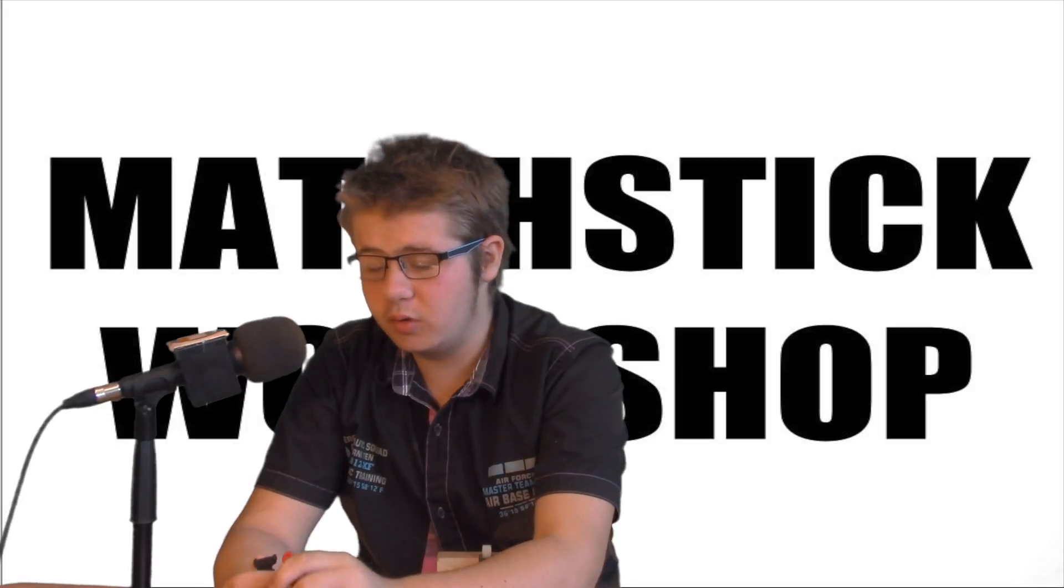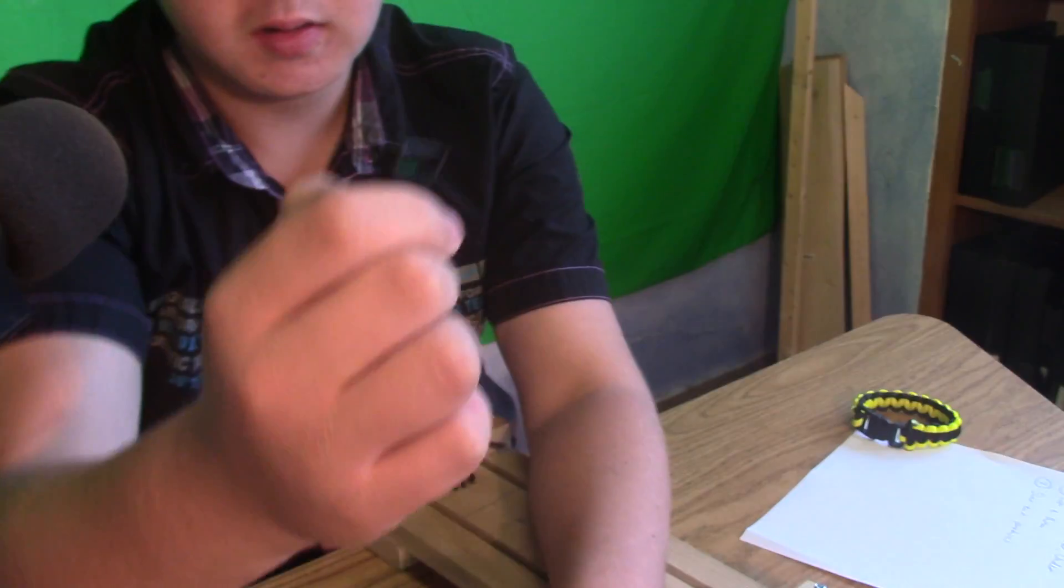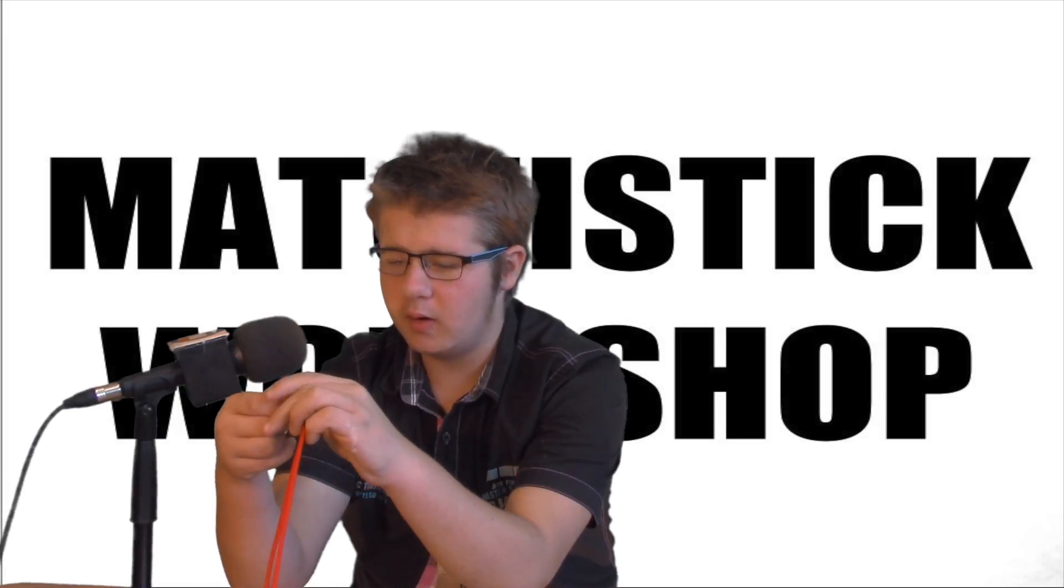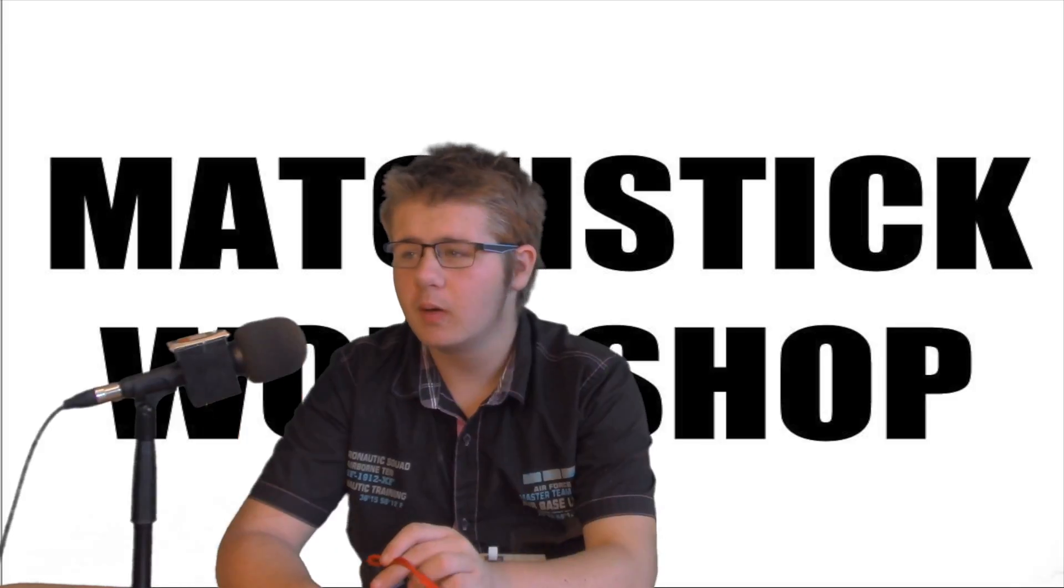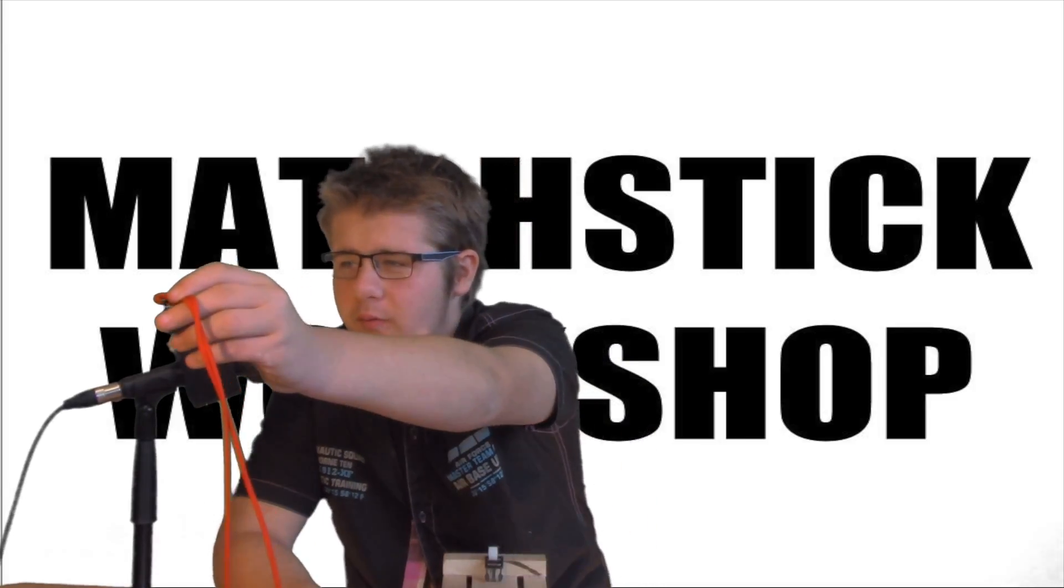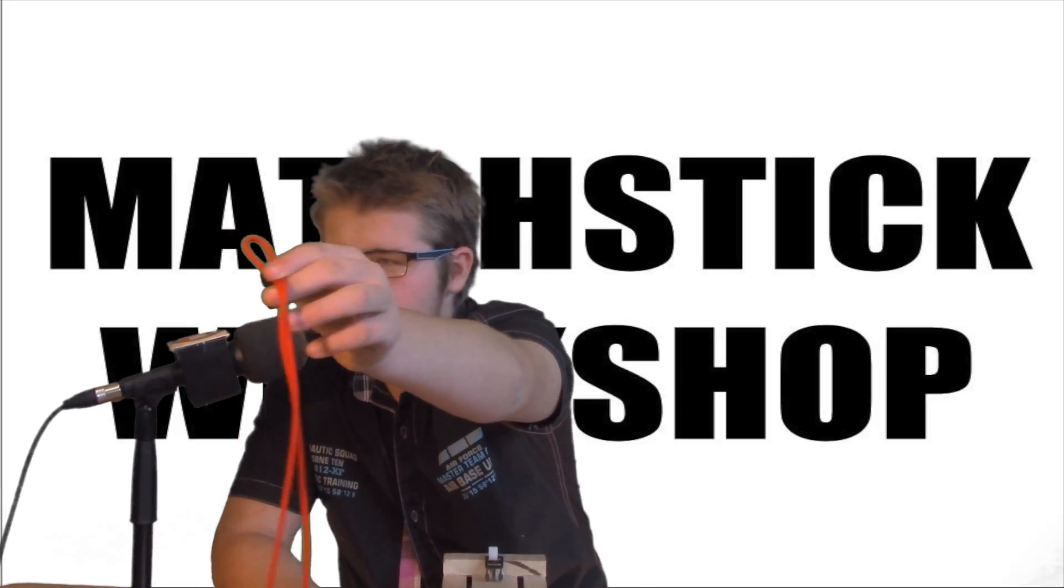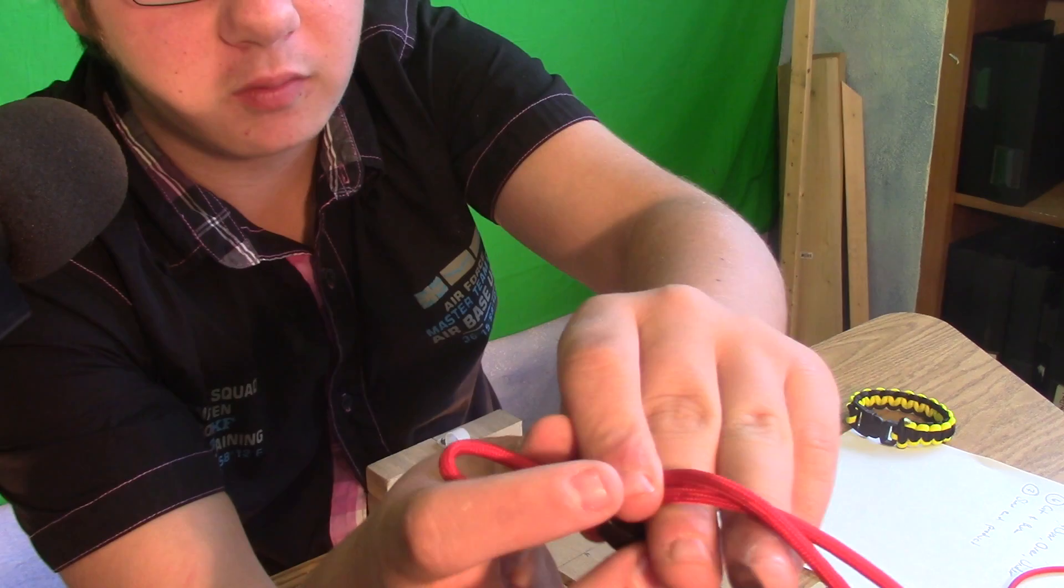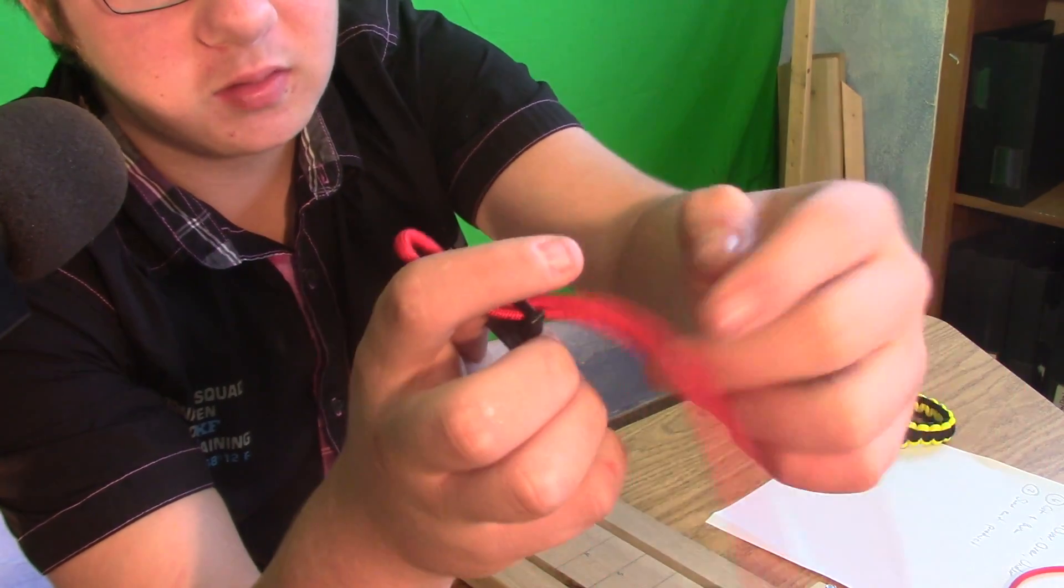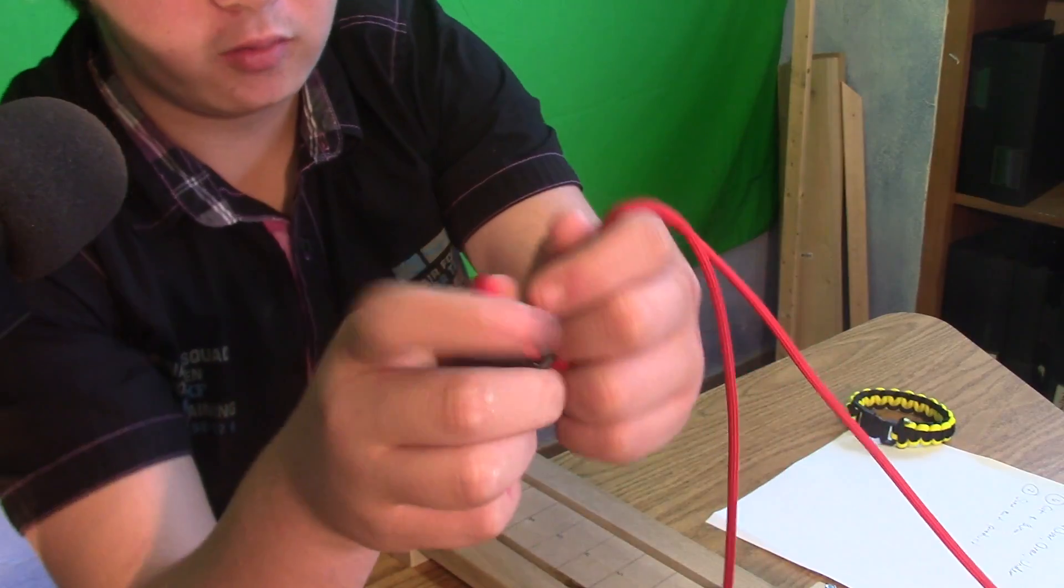Now I'm going to show you how to put the string onto the clip, which is this piece. And I'm going to go ahead and do that now. So I put it on. When you have your string through the clip, all you have to do now is take the rest of the string that you have on the other side, and put it through the loop.